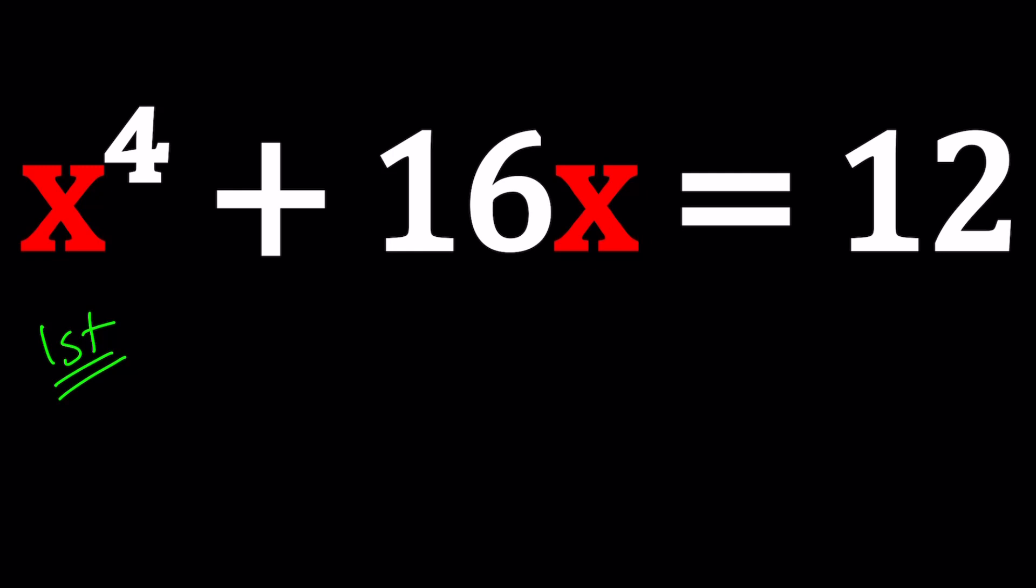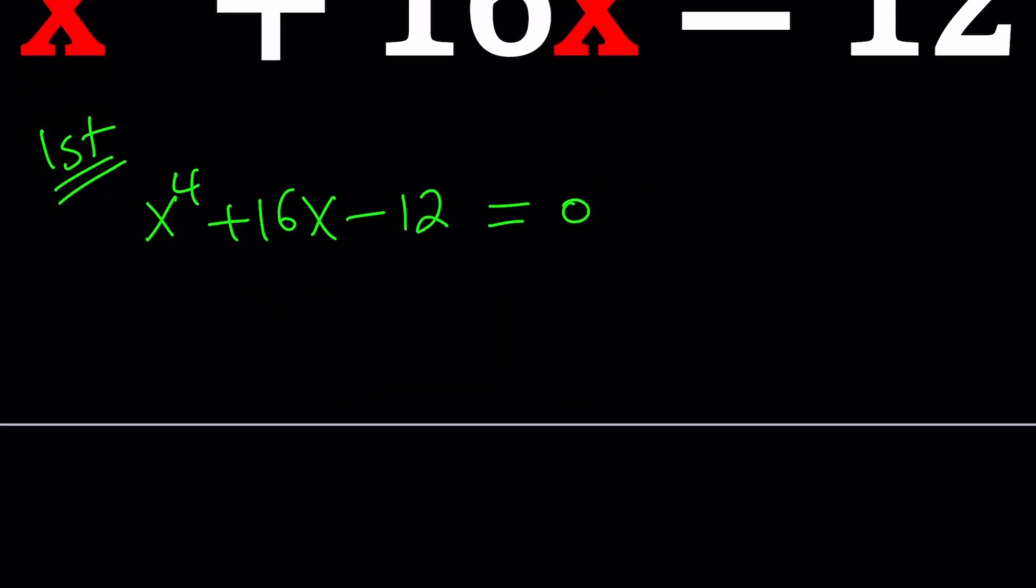So for my first method, I'm going to go ahead and put everything on the same side. Subtract 12. And then, this is a quartic, but it's missing a lot of terms. There's no x cubed, there's no x squared. So that's good.